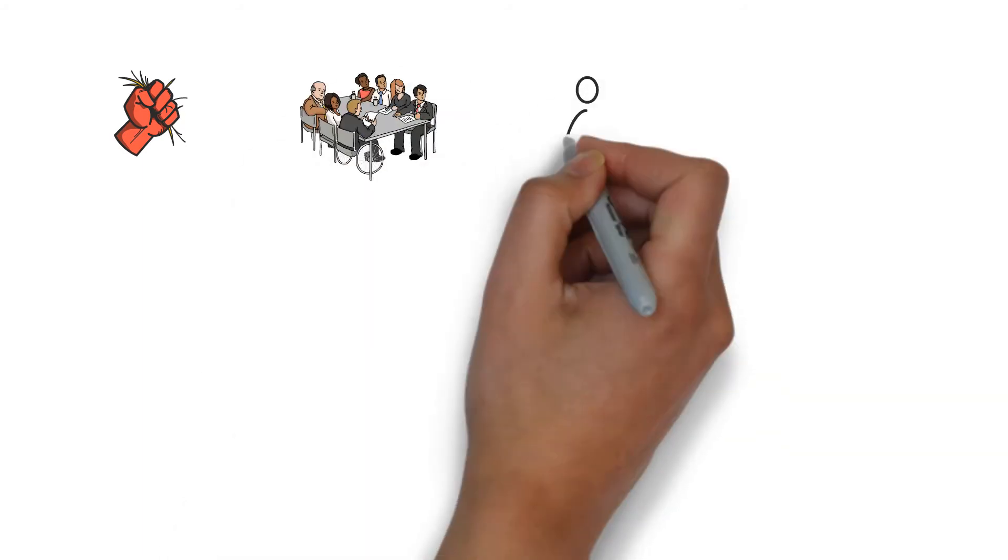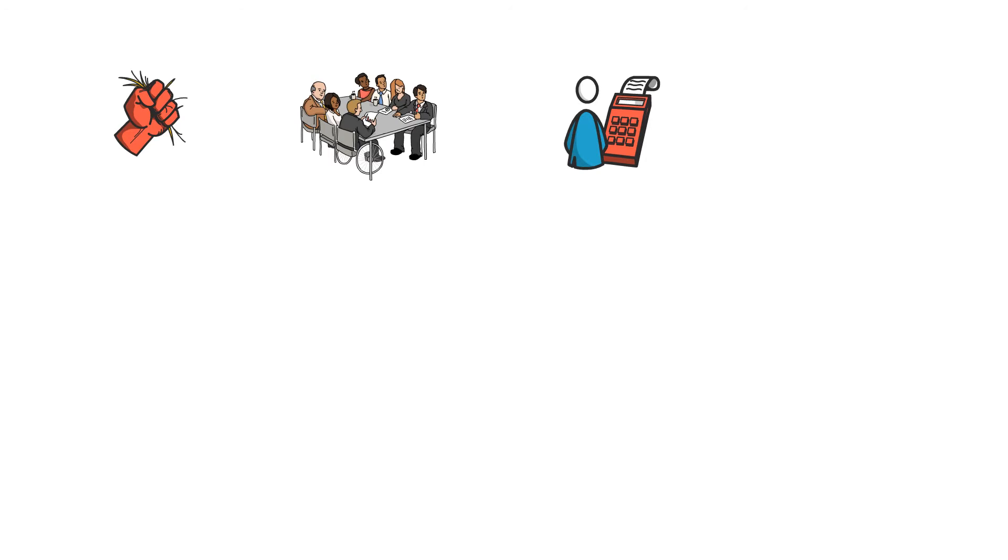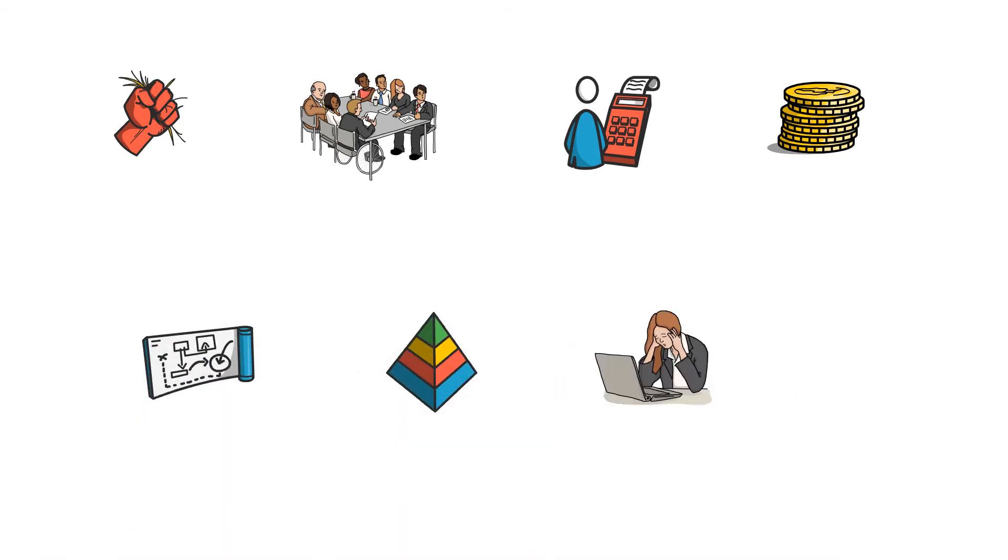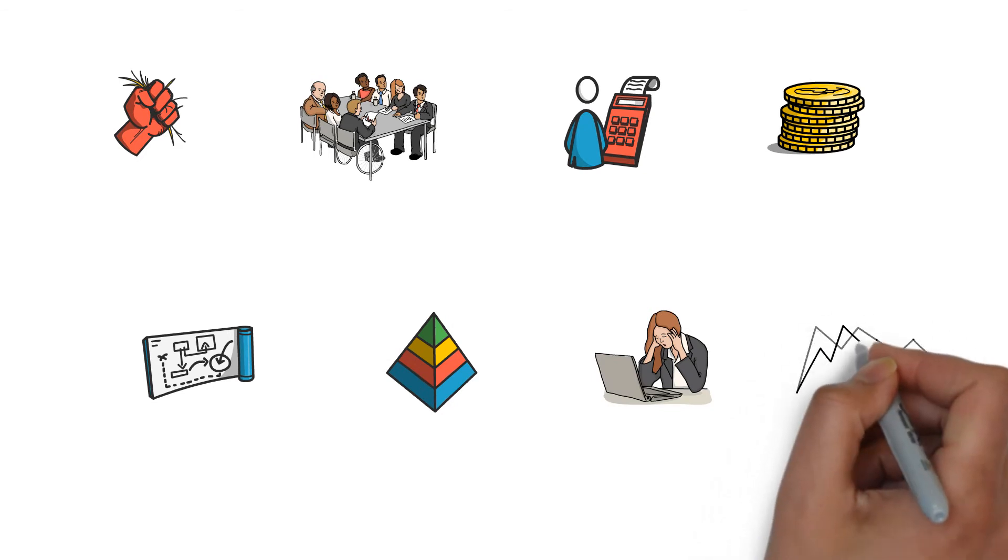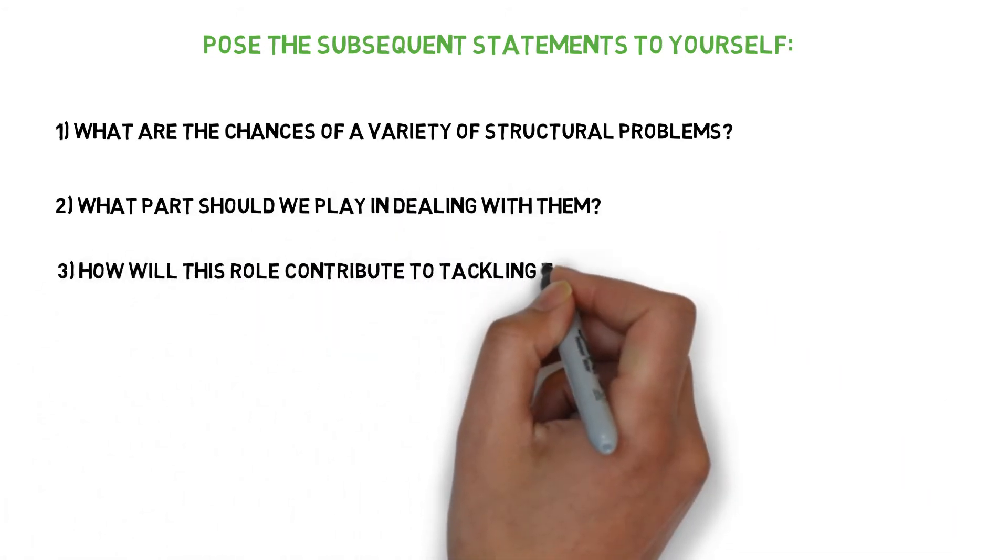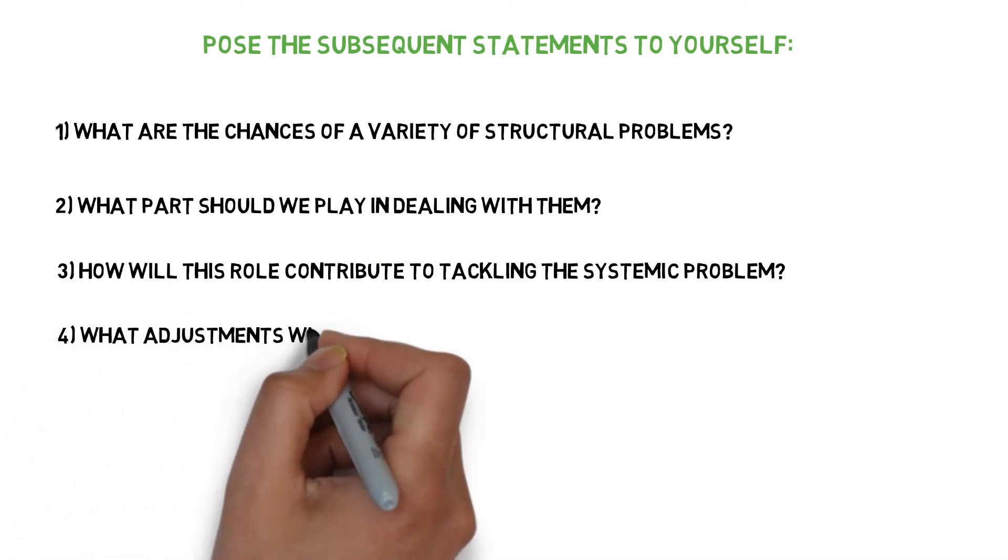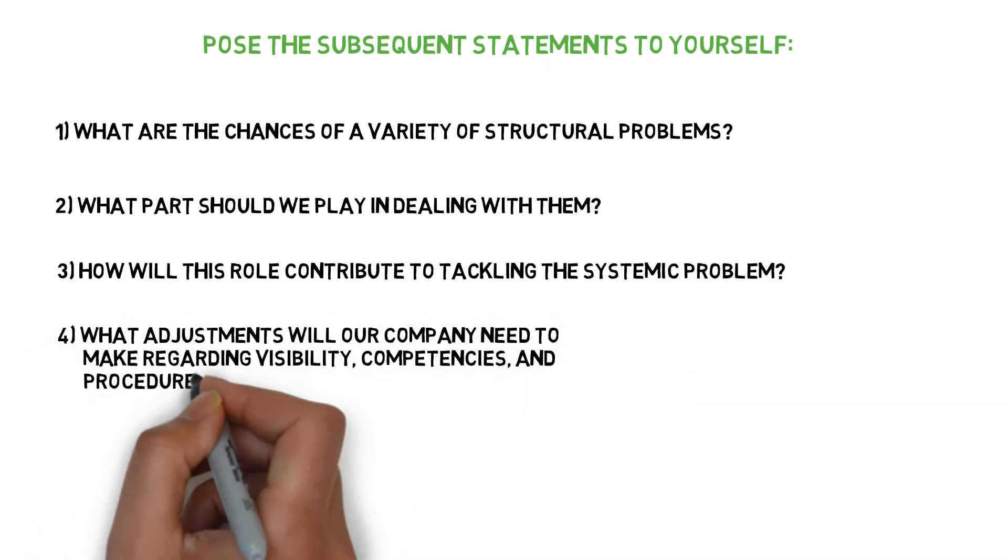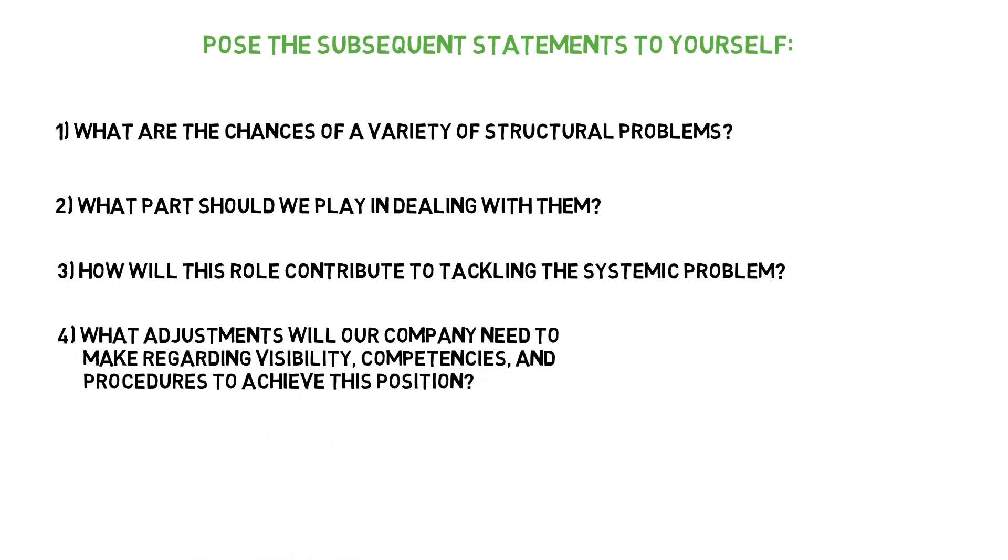Take a look outside of your control of the management as well. In an age of an even more accountable economy, relying exclusively on profitability would not be enough or even appropriate. Rather than employing a planned future, evaluate the effects of structural difficulties and detect low frequencies of oncoming catastrophes. Pose the subsequent statements to yourself: What are the chances of a variety of structural problems? What part should we play in dealing with them? How will this role contribute to tackling the systemic problem? What adjustments will our company need to make regarding visibility, competencies, and procedures to achieve this position? What are the no regrets acts we can perform right now?